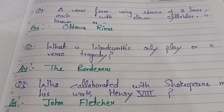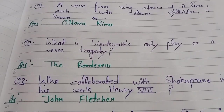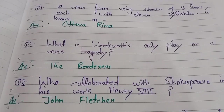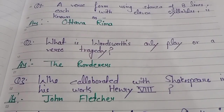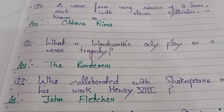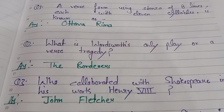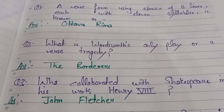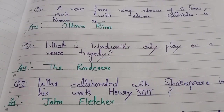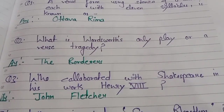Question number one: a verse form using a stanza of eight lines each with 11 syllables is known as? A verse form with an eight-line stanza having 11 syllables each is known as Ottava Rima. It is called Ottava Rima.